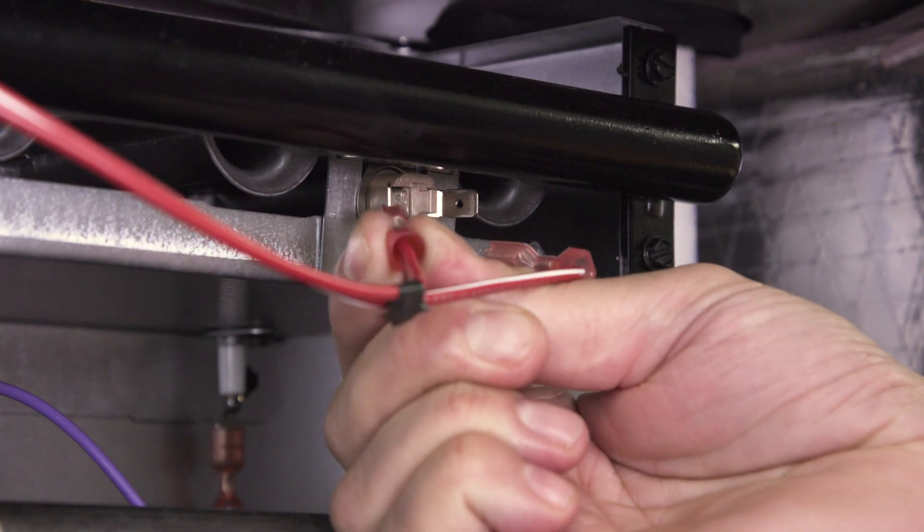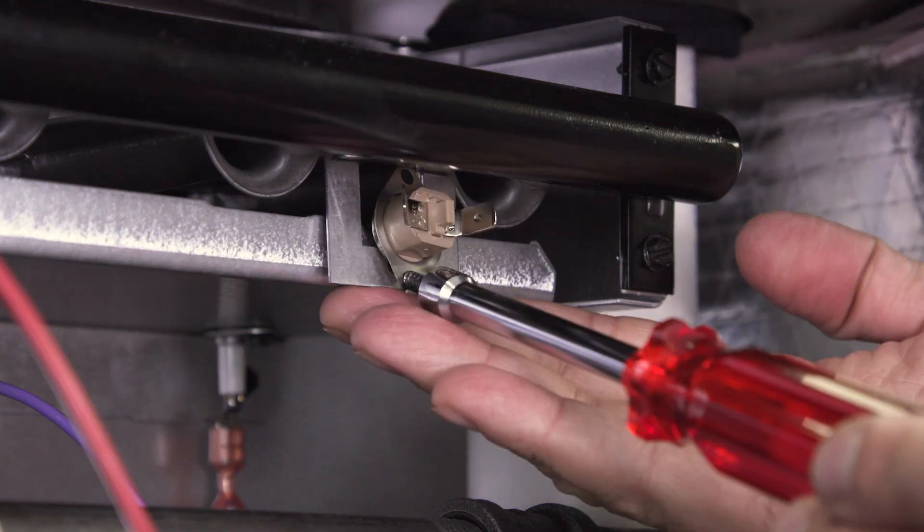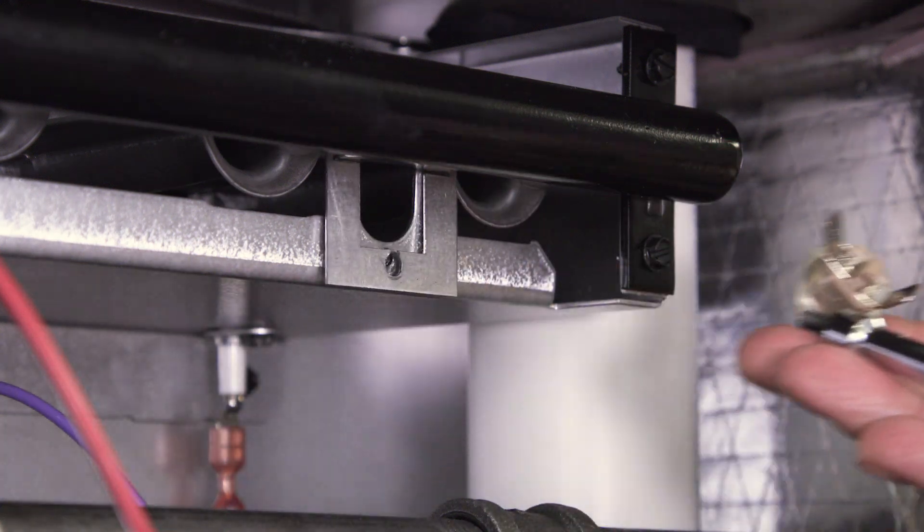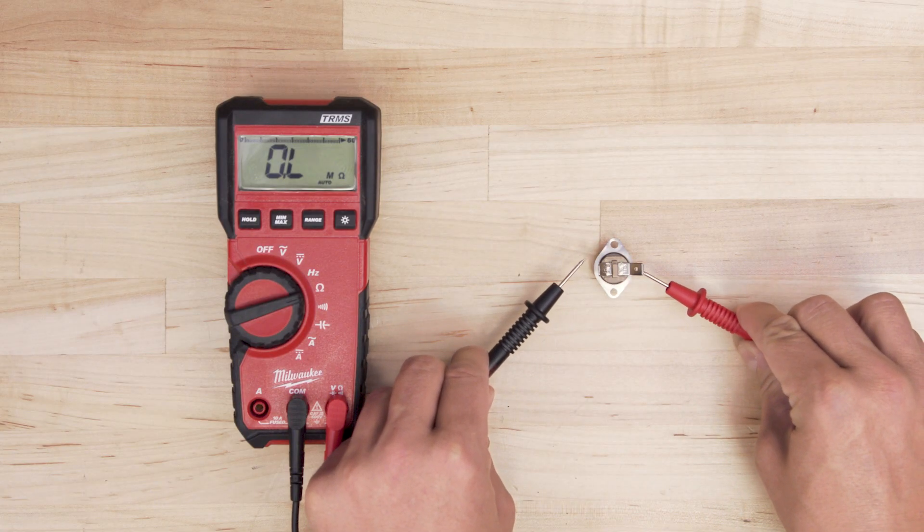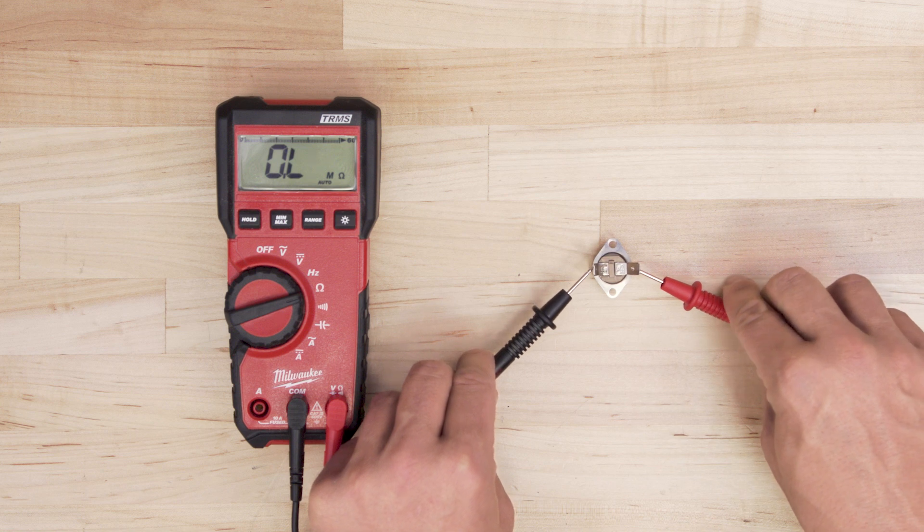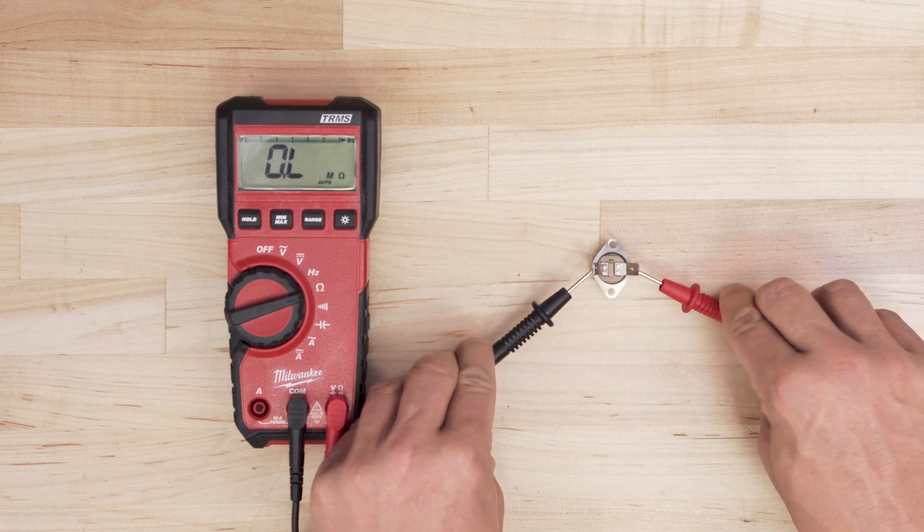If there's no sign of a flame rollout, then the flame rollout switch might be defective. Test the switch for continuity. If there is no continuity, then replace the flame rollout switch. If there's continuity and the flame still doesn't stay lit, then call a professional.